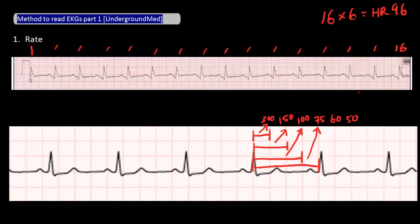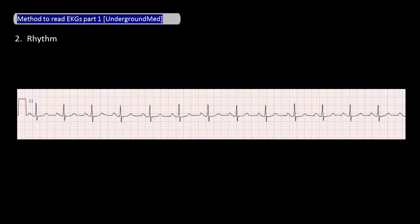Once you have calculated the rate, less than 60 is considered bradycardia and greater than 100 is considered tachycardia. So that's it for rate.